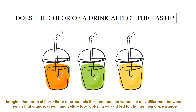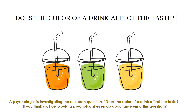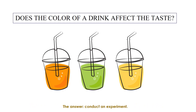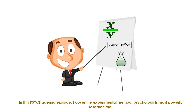Imagine that each of these three cups contains the same bottled water. The only difference between them is that orange, green, and yellow food coloring was added to change their appearance. A psychologist is investigating the research question: does the color of a drink affect the taste? How would a psychologist go about answering this question? Conduct an experiment. In this Psychedemia episode, I cover the experimental method — psychologists' most powerful research tool.